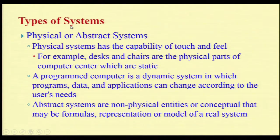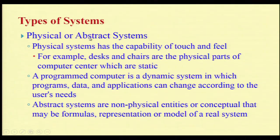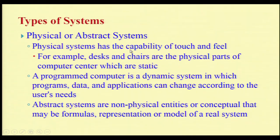There are several different types of systems. One is called the physical or abstract system. A physical system has the capability to touch and feel — physically it is available. Desks and chairs are said to be physical parts of a system and are considered static systems, whereas a computer is said to be a dynamic system. Static systems will not move from one place to another.